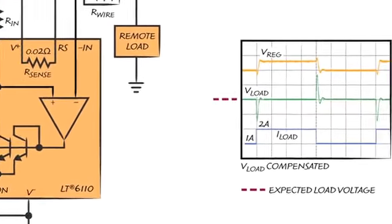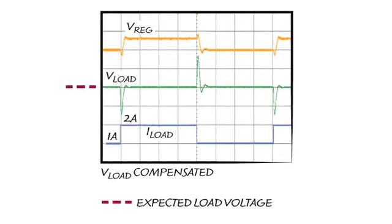The LT6110 requires that the resistance of the wire be known. However, that resistance does not have to be very accurate to achieve good compensation. For example, if the resistance of the wire were to double, causing a 50% error in the compensation voltage, the regulation at the load would still improve by a factor of 2.